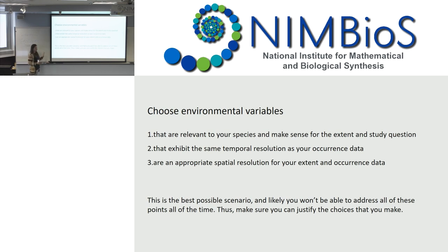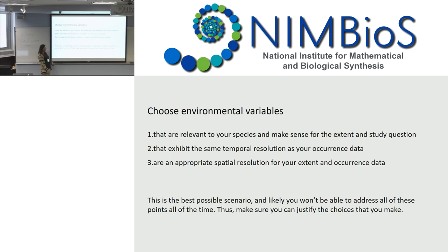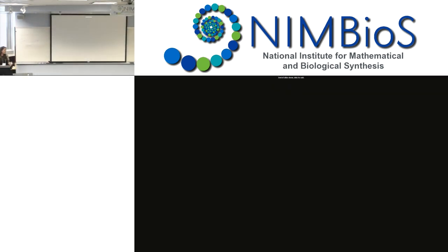Here's my take-home message: First, choose environmental variables that are relevant to your species and make sense for the extents of your study question. Second, make sure they exhibit the same temporal resolution as your occurrence data and are at an appropriate spatial resolution for your extents. However, you will never find the perfect variable at the perfect resolution at the exact time frame you need in the area you need it — so if you have to compromise, make sure you can justify your choices.